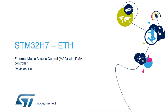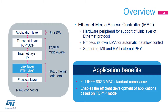Welcome to this presentation of the STM32H7 Ethernet MAC Peripheral. This peripheral is in charge of the Media Access Control layer of Ethernet communication. The peripheral presented in these slides is a Media Access Controller, or MAC, for Ethernet protocol. It is fully compliant with the IEEE 802.3 standard.